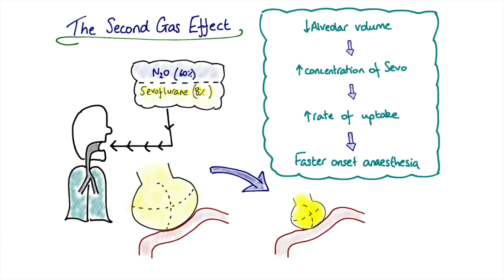And indeed, for a gas induction, particularly for children, we'll use a nitrous oxygen mix with our sevoflurane if we want fast and rapid onset anesthesia versus an air oxygen mix. Because we can utilize the concentration effect to increase the delivery of our second gas. And that is the second gas effect.